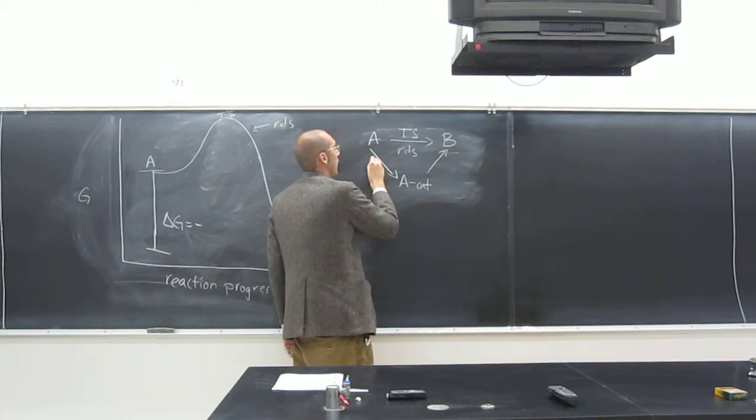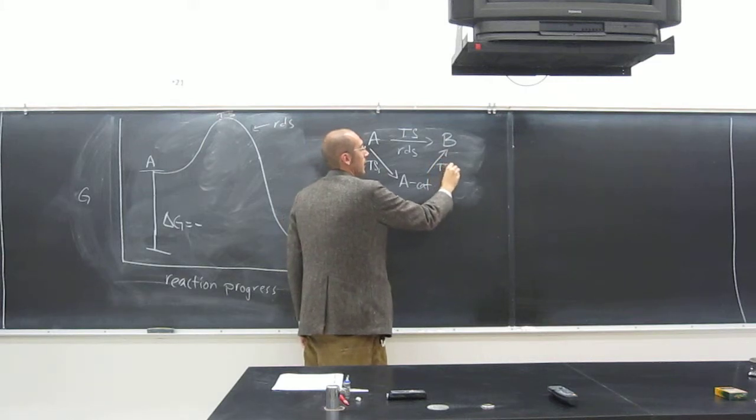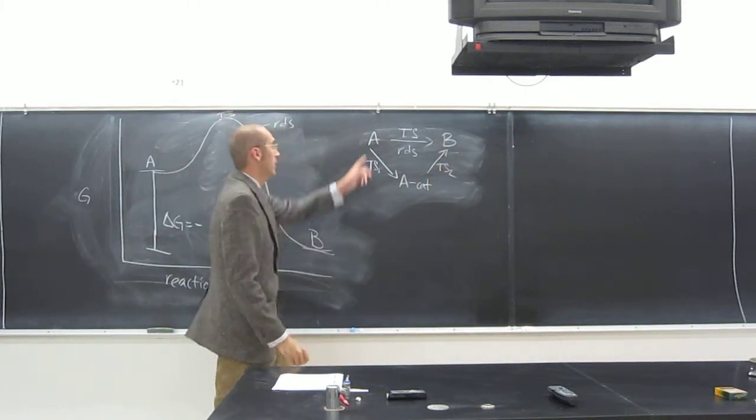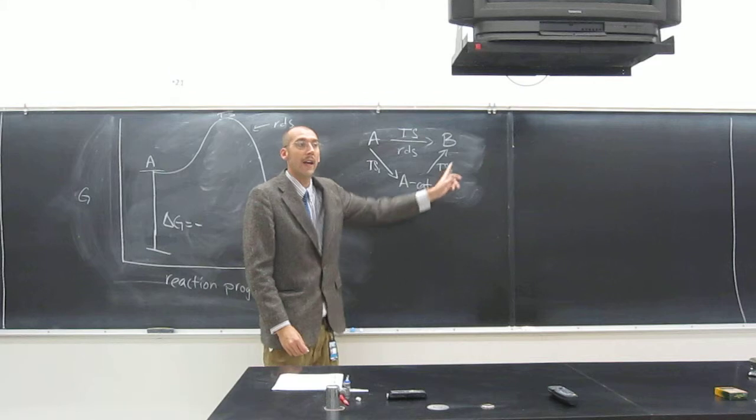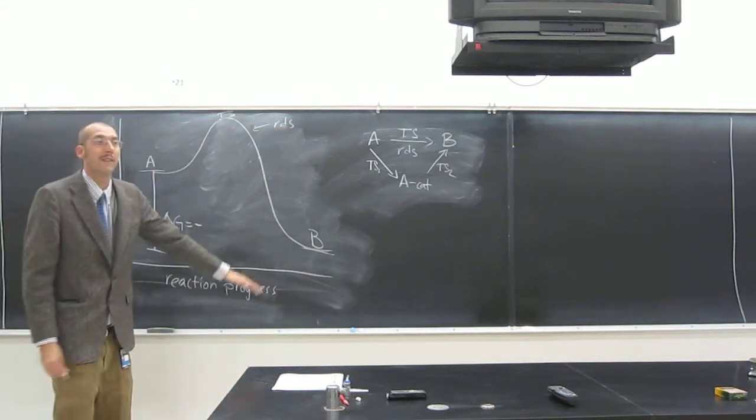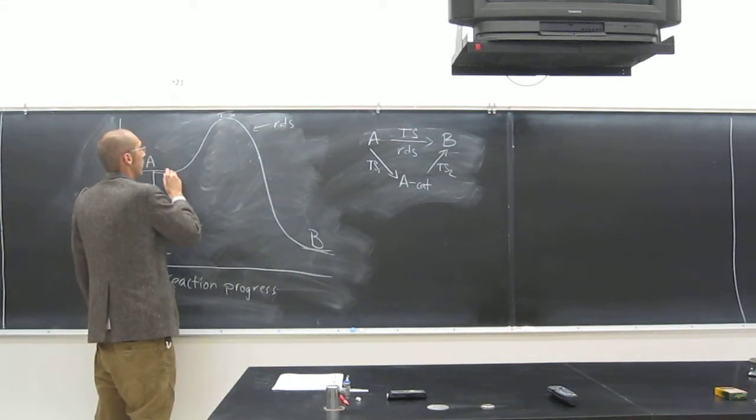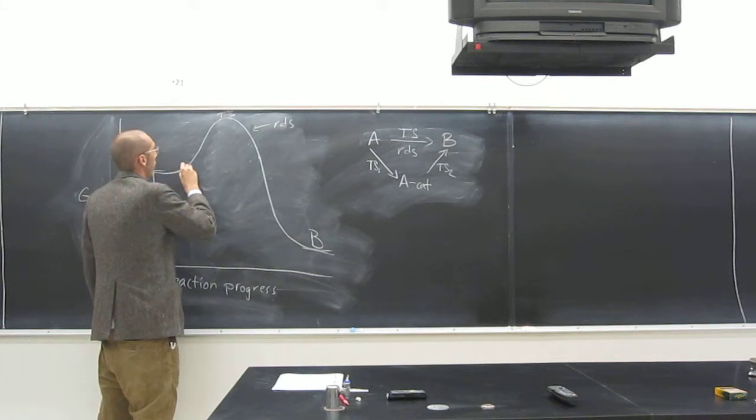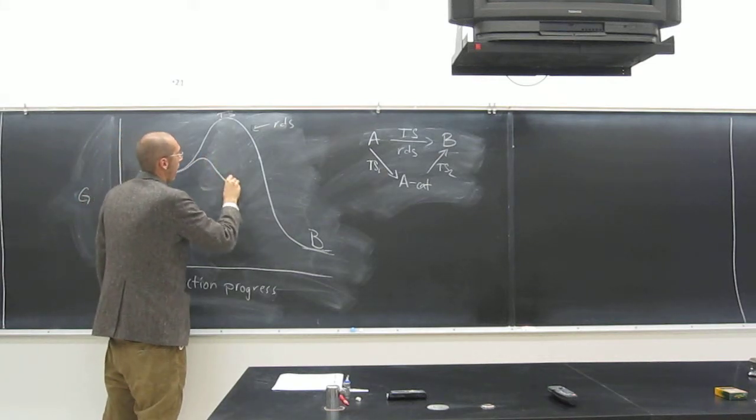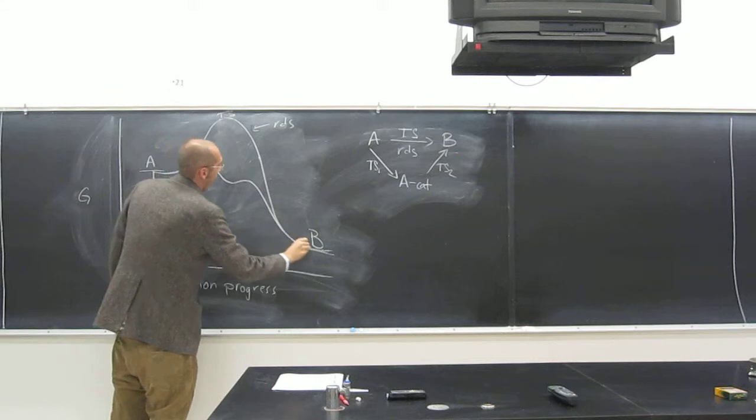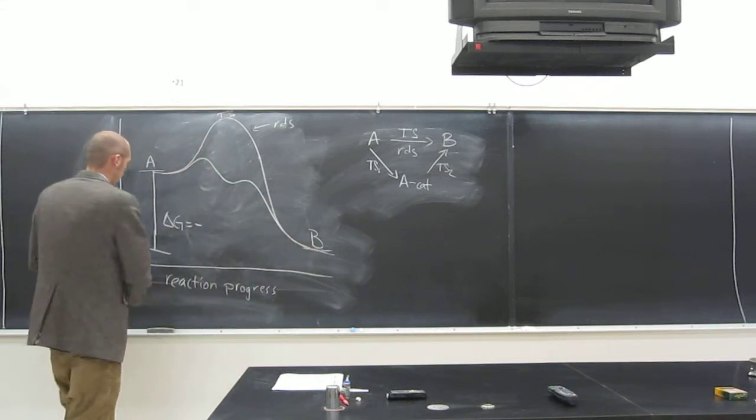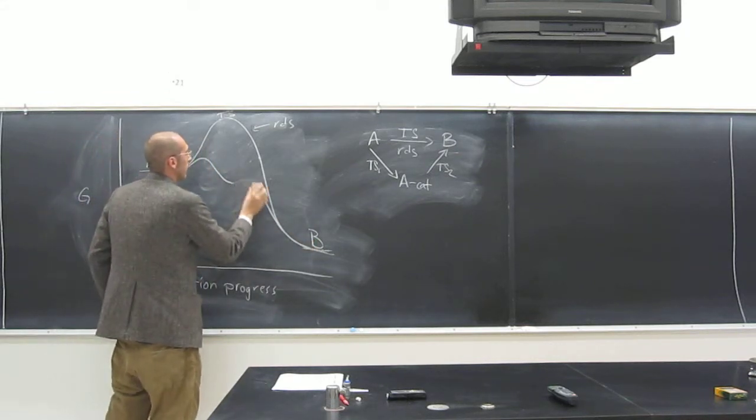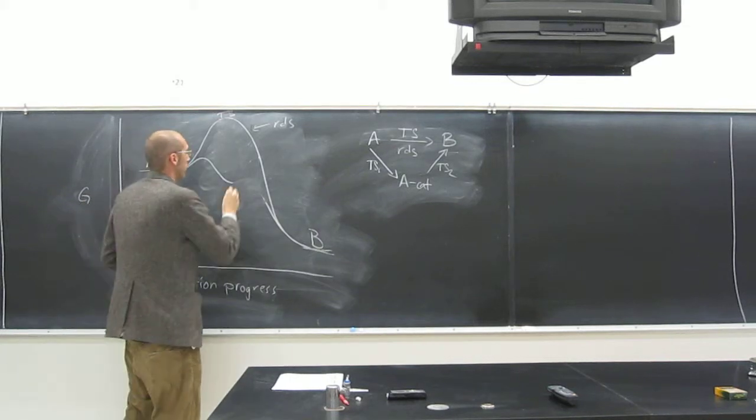And then, so now we've got TS1 and TS2 like that. So it's now become a two-step reaction. But it's lowered the activation energy, so it's more like that. Make this a little higher so we can actually write stuff in there.